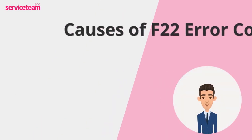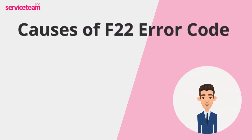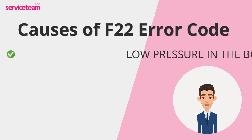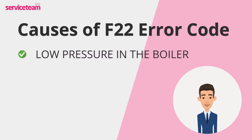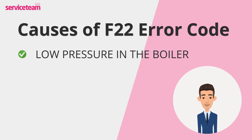Let's see what causes the F22 Glow-worm error code. One of the most common reasons for the F22 fault code in Glow-worm boilers is low water pressure. Boilers need consistent water pressure to circulate hot water effectively. When the pressure drops too low, the system can't function as it should.